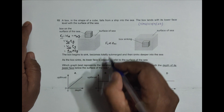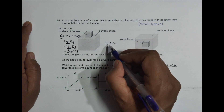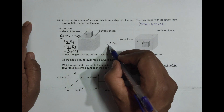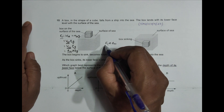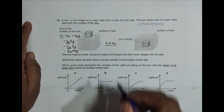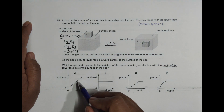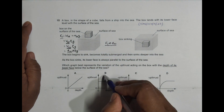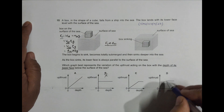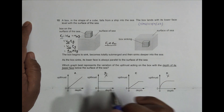That means the graph should be a straight line passing through the origin. So this could be one of the answers; this one cannot, and this also cannot. Here we have a portion that is a straight line, so it could be correct.